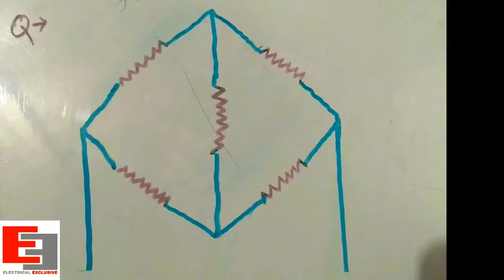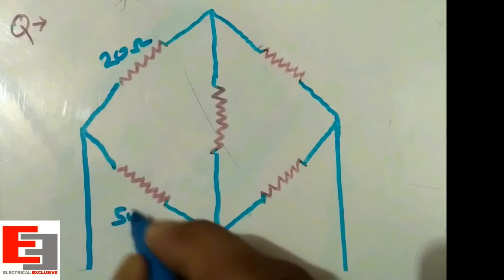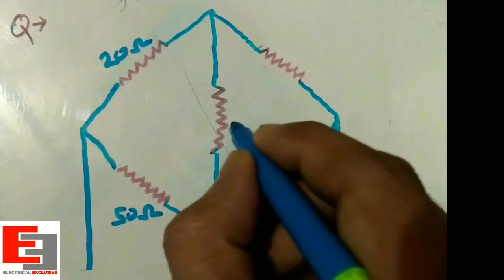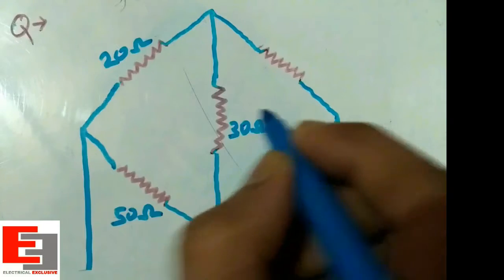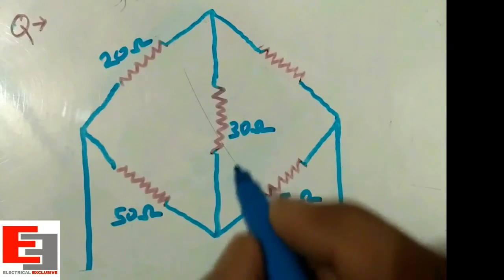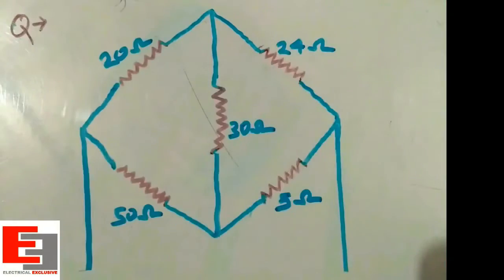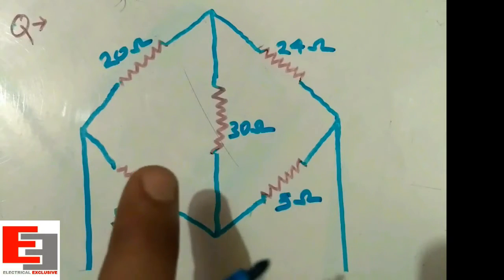In the last class we learnt delta-star and star-delta transformation. In this class we shall discuss some questions. This is the first question: this resistance is 20 ohm, this resistance is 50 ohm, this resistance is given as 30 ohm, this resistance is 5 ohm, and finally this resistance is 24 ohm.